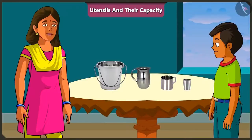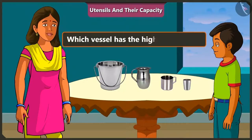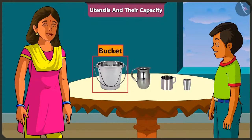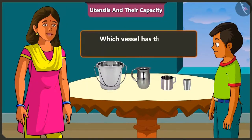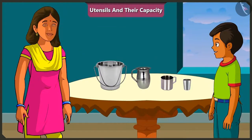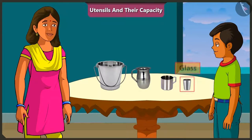Great, Mishtu, now tell me which of these vessels has the greatest capacity? The bucket has the most capacity. And which vessel has the least capacity? Here the smallest vessel is the glass, so the glass has the least capacity. Well done, Mishtu. Come on, let me show you something.